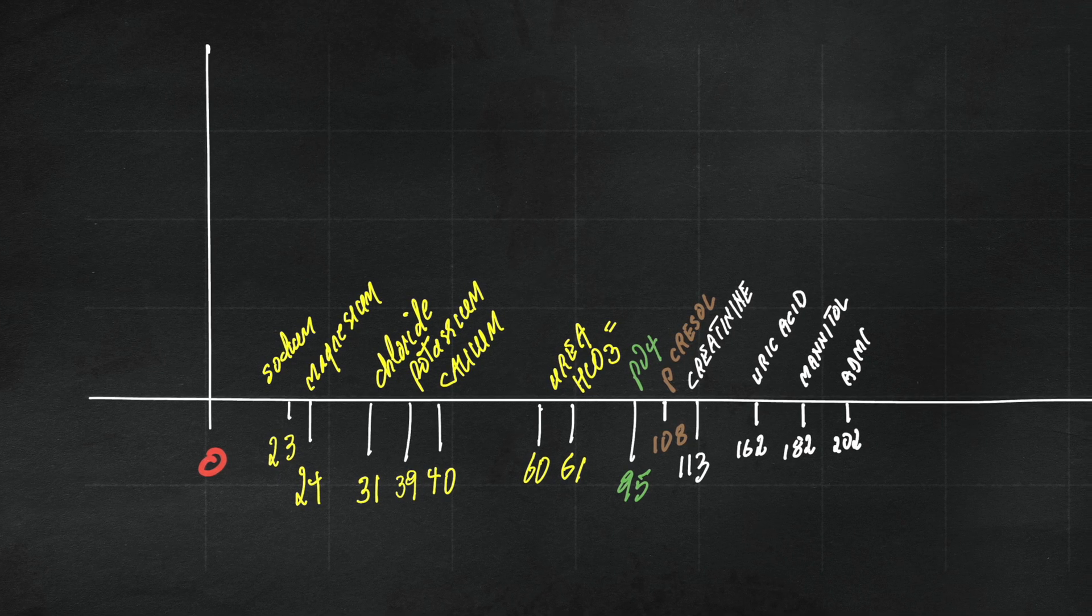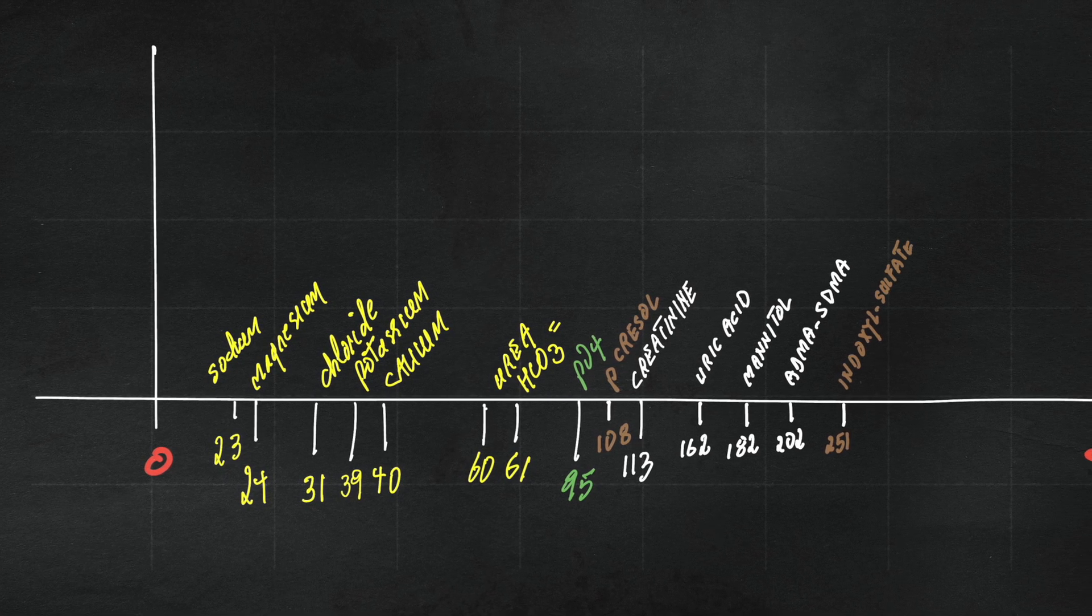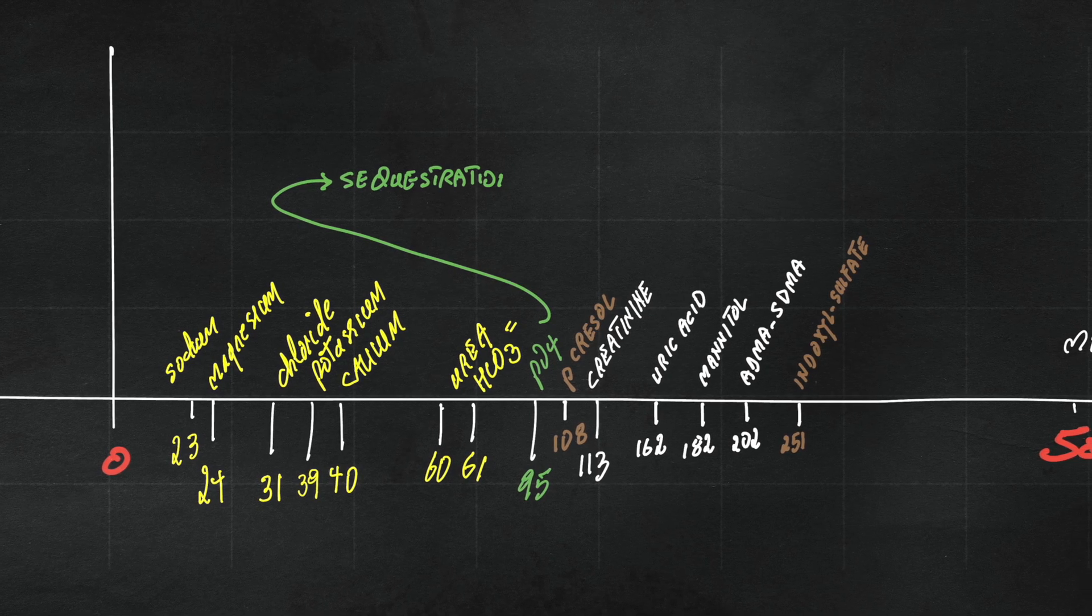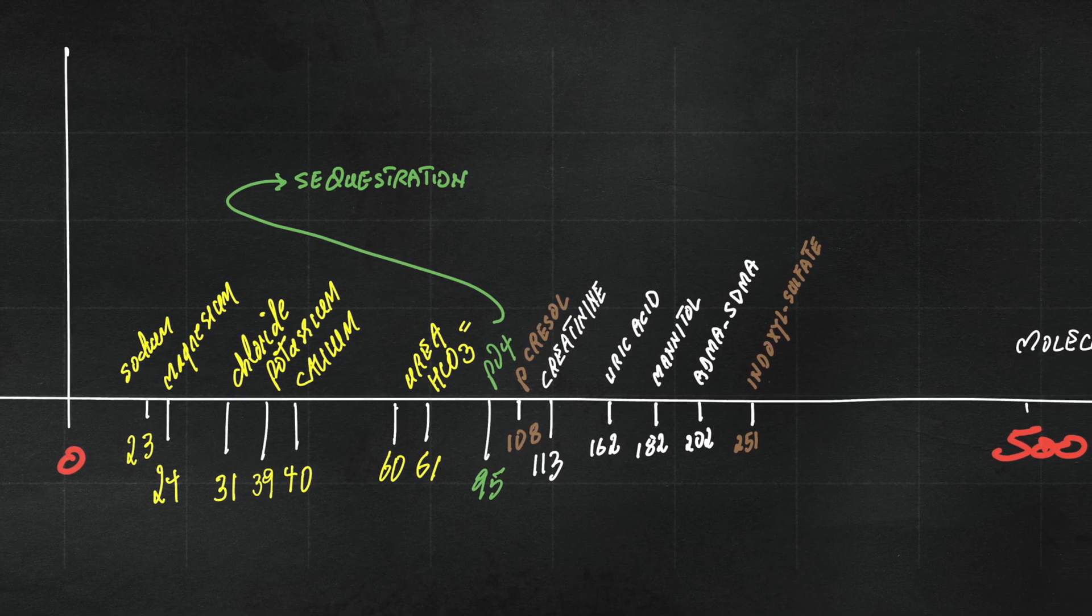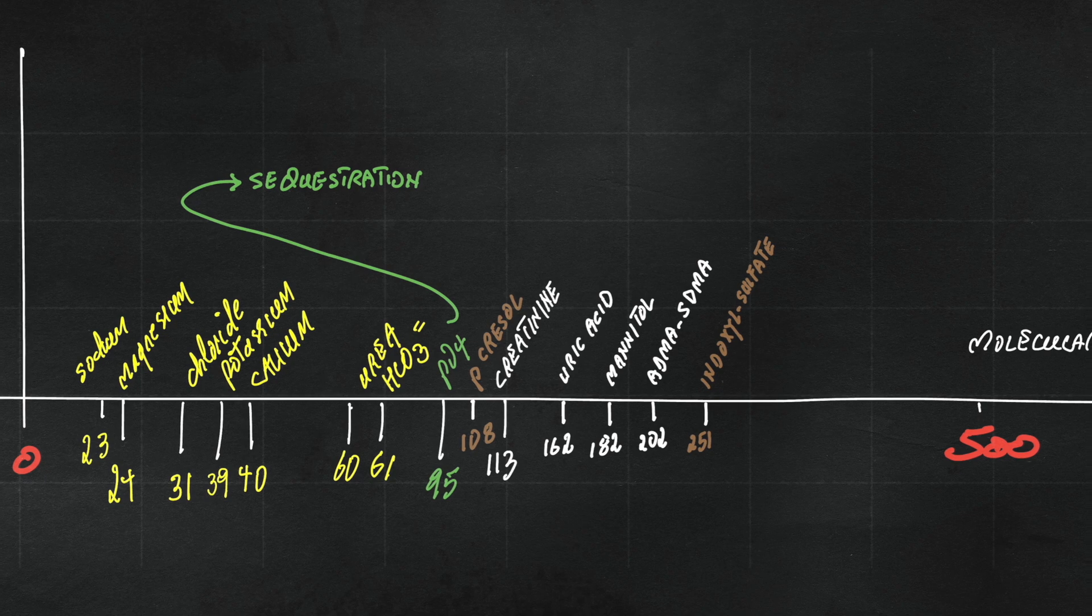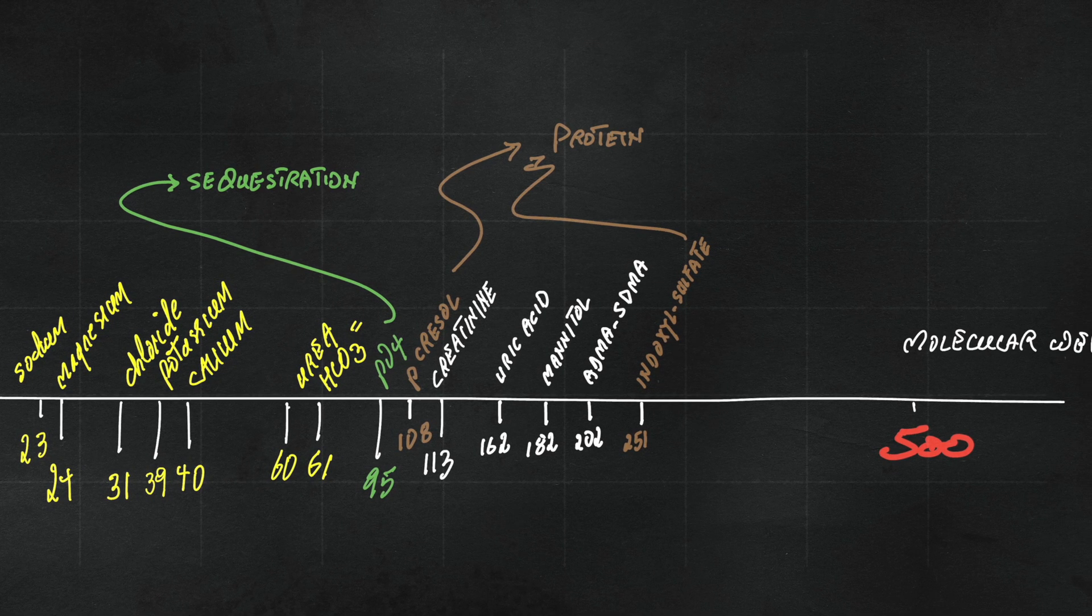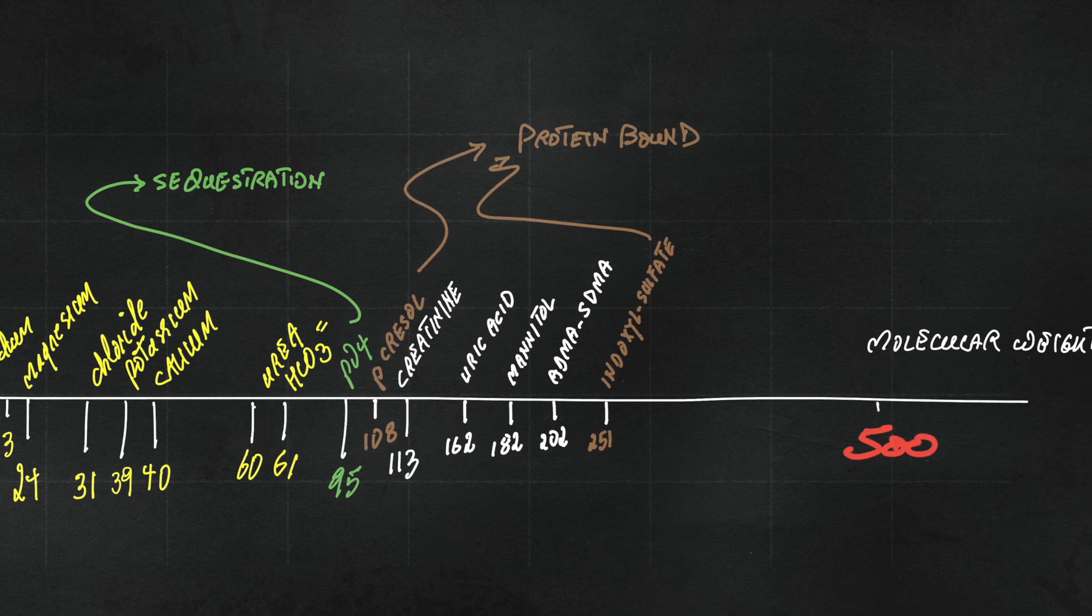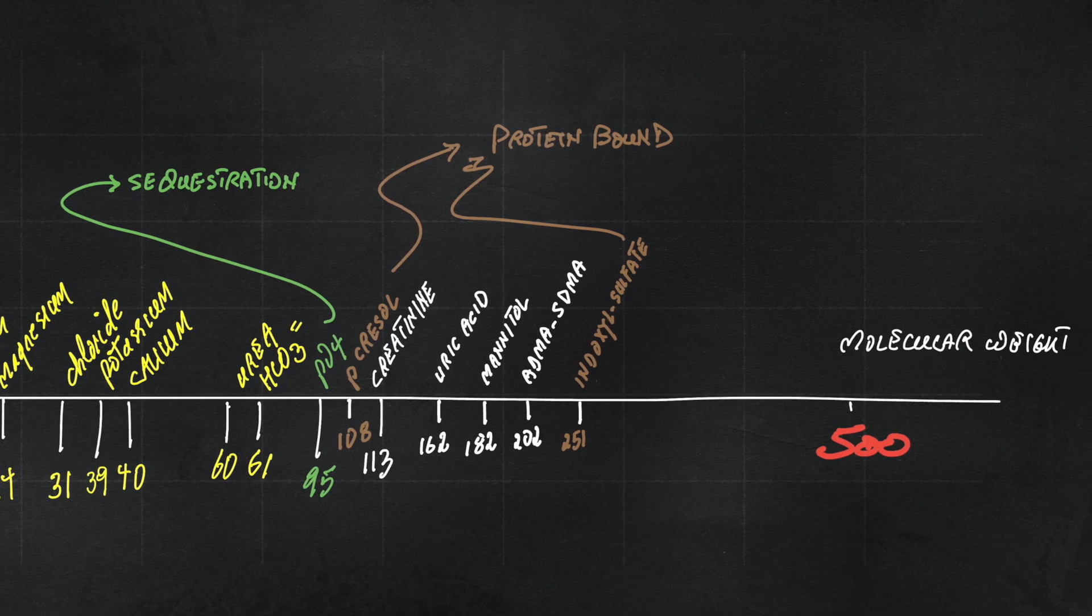Not all small solutes behave the same way. For example, phosphorus is compartmentalized and it's harder to remove than urea is, even though they have very similar weight. Some others are protein bound like p-cresol and indoxyl sulfate, and they're not removed by dialysis at all.